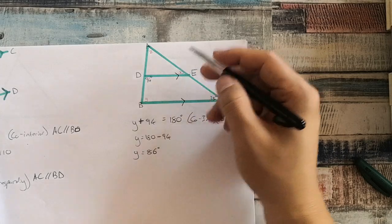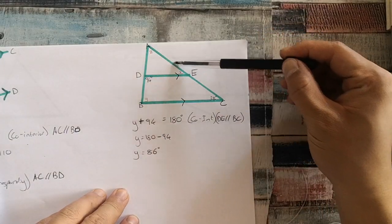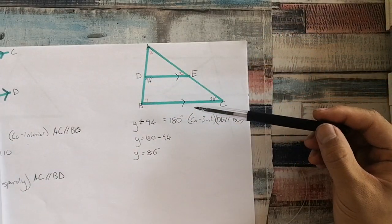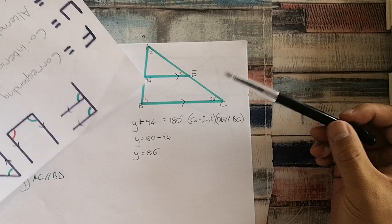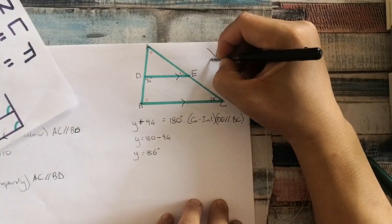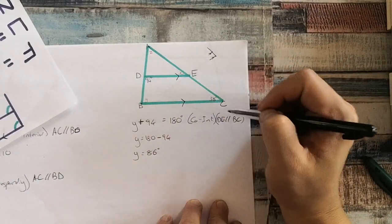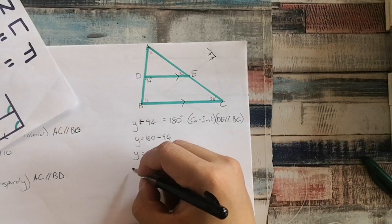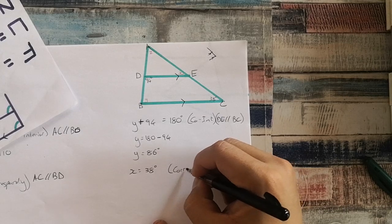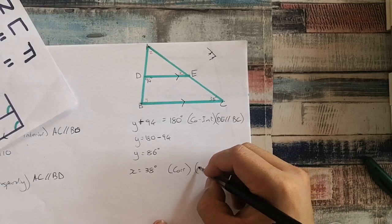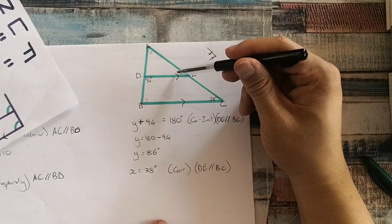How am I going to solve for X? You can see there is an F over here. My F looks like that — here's the first line, and the F goes in this direction. There is my F, which means this X is equal to 38 as well. So X is equal to 38 degrees because of corresponding angles, and DE is parallel to BC.